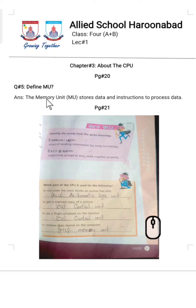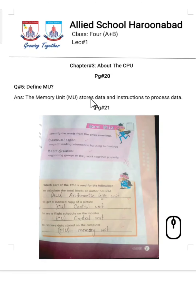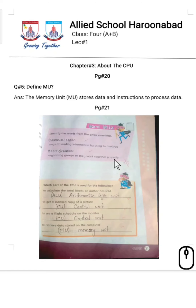The answer is: the Memory Unit — MU. MU is the short form of Memory Unit — M for Memory and U for Unit. It stores data and instructions to process data. Just as ALU's job is to perform all calculations, and CU's job is to control the working, similarly MU — the Memory Unit — stores data and instructions and then processes that data.